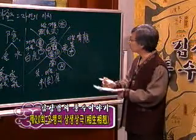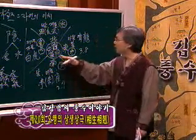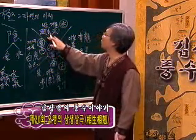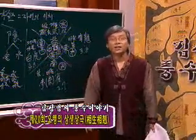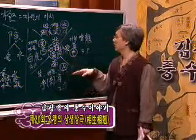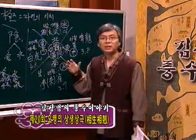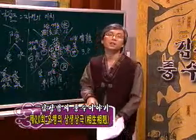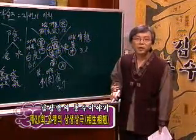숫자로도 배치를 시켰는데, 동쪽은 3·8, 남쪽은 2·7, 중앙은 5·10, 서쪽(금)은 4·9, 북쪽은 1·6이라는 숫자를 배치시켰습니다. 이런 숫자들은 풍수에서 5일장 장날과도 연관이 됩니다. 목의 마을이면 3·8장이 되는 경우가 많고, 금기운의 마을이면 4·9장이 되더라는 겁니다.